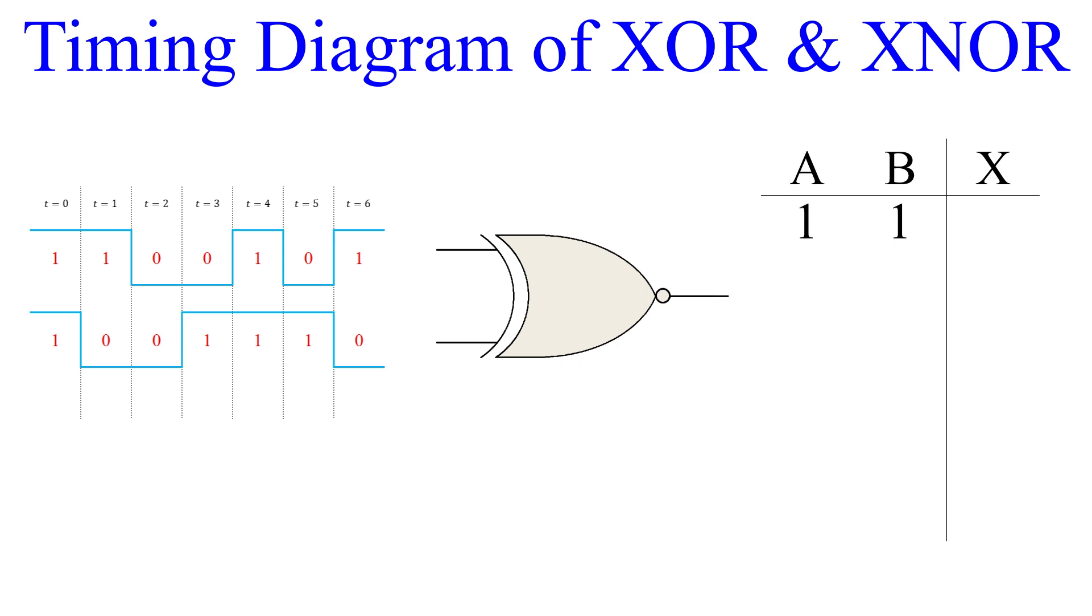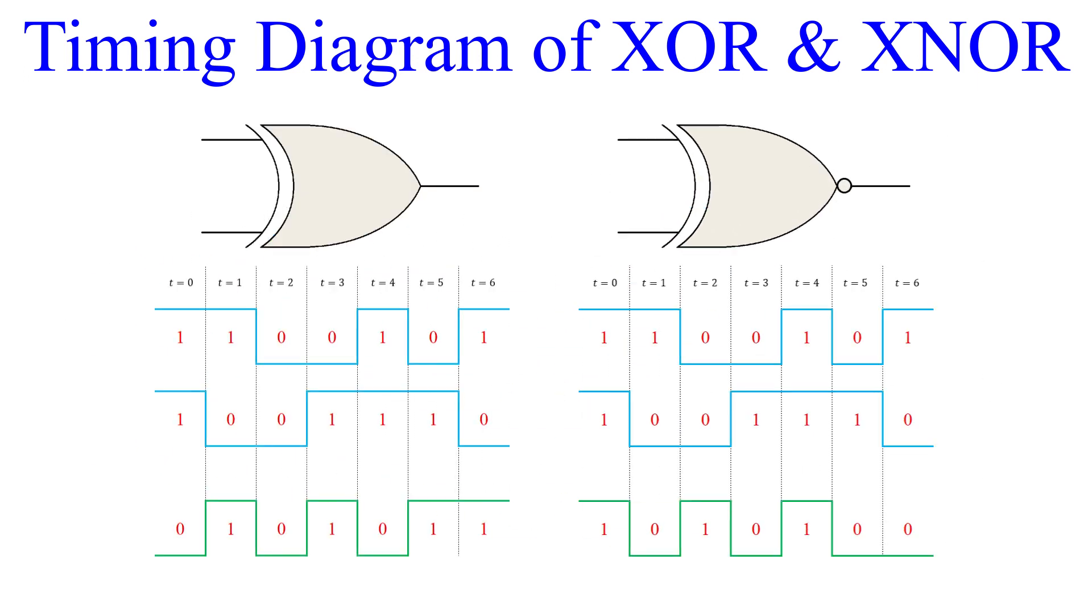Truth table first. Now let's fill out the outputs, keeping in mind that this is the inverse of XOR logic. And now we can draw our output waveform. Alright, so how did you do? Let's put this timing diagram and the timing diagram for the XOR next to each other. And as expected, we can see how these two gates mirror one another.